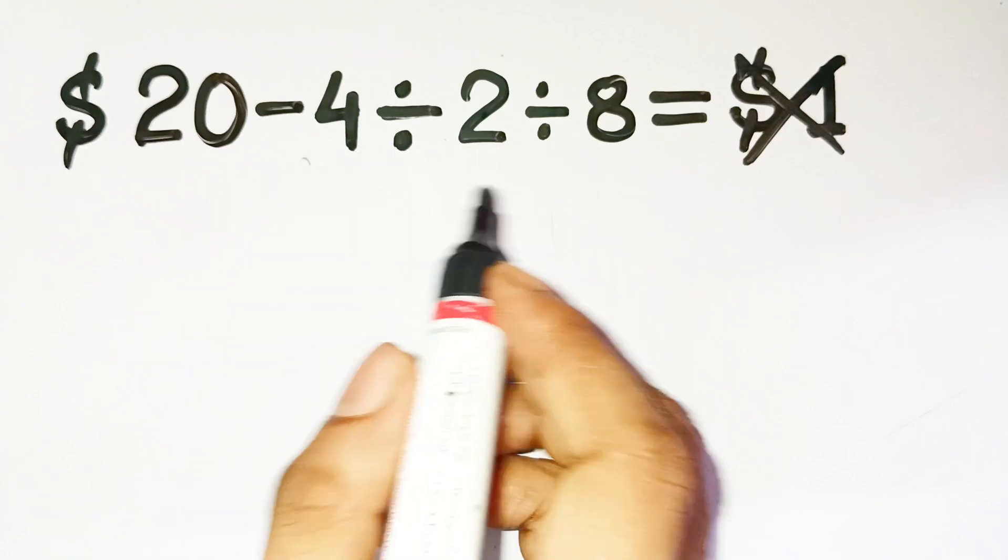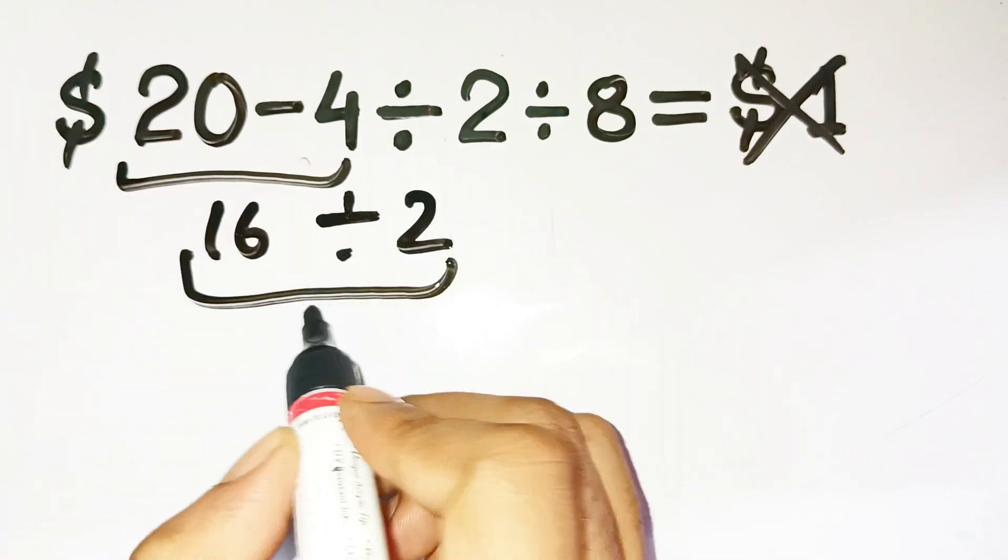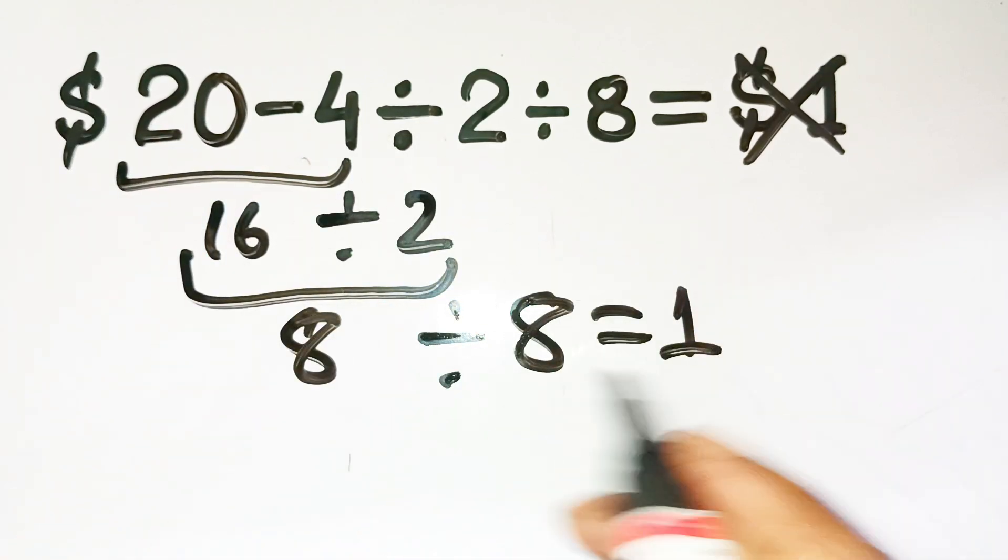And most people rush it. They go, all right, 20 minus 4 is 16, then 16 divided by 2 is 8, and 8 divided by 8 is 1. Boom! They proudly say the answer is $1.